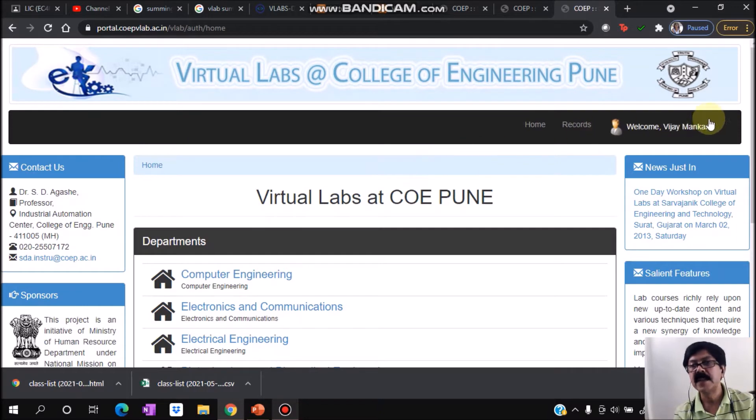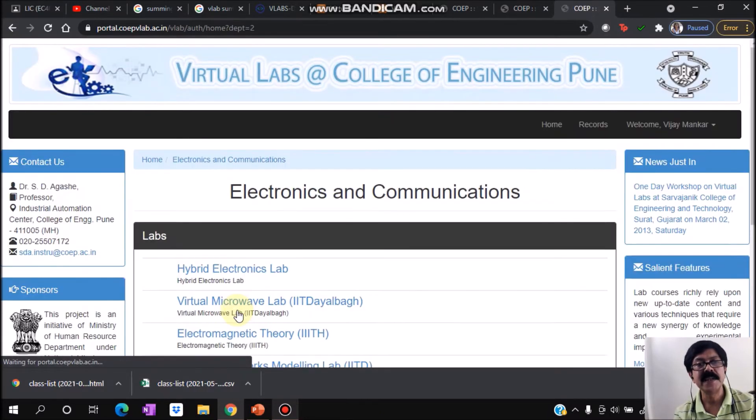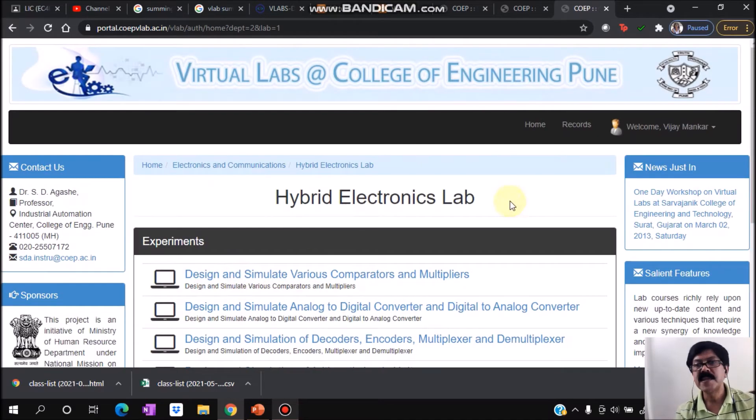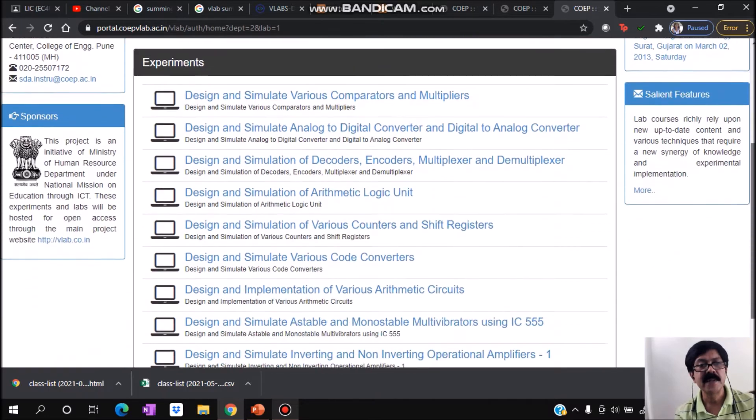Now I'm clicking Electronics and Communication. There I will select Hybrid Electronics Lab. If you see the list of experiments here, you'll find at the last 'Design and Simulate Inverting and Non-Inverting Operational Amplifier'.